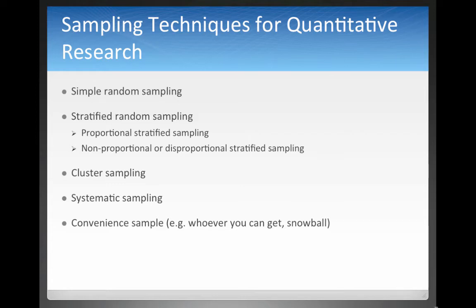In quantitative research, we have five broad sampling methods: simple random sampling, stratified random sampling, cluster sampling, systematic sampling, and convenience sampling.